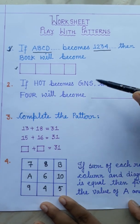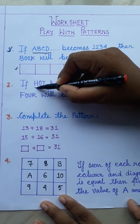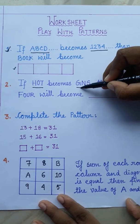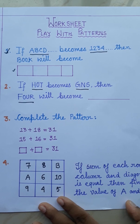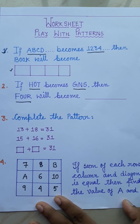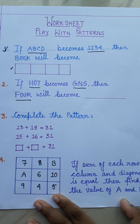Next, if HOT becomes GNS, then FOUR will become what? To solve this sum, at first you have to understand the pattern.